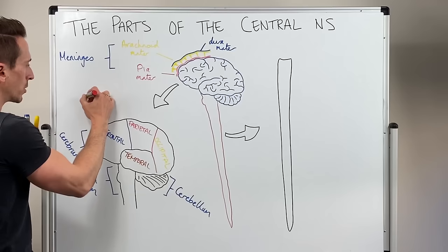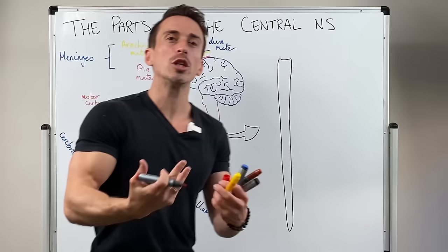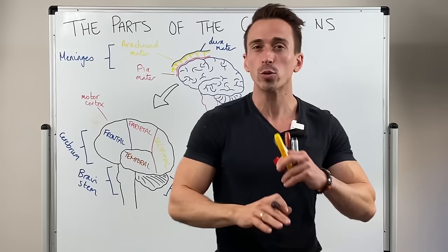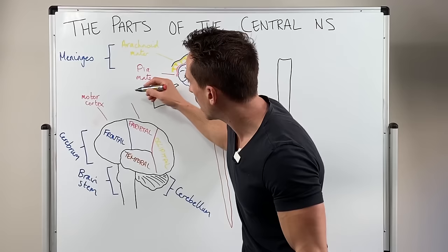So the frontal lobe is the site of the motor cortex. Now, what that means is this is the area in which if you want to consciously initiate movement. So to talk, to move, to run, jump, sing, dance, whatever it may be. It must begin at the motor cortex which is located at the frontal lobe.